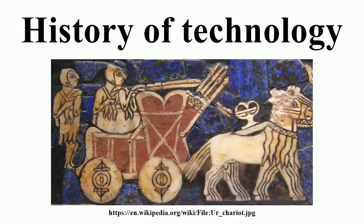White introduced a formula P equals E times T, where E is a measure of energy consumed and T is the measure of efficiency of technical factors utilizing the energy. In his own words, culture evolves as the amount of energy harnessed per capita per year is increased, or as the efficiency of the instrumental means of putting the energy to work is increased. Russian astronomer Nikolai Kardashev extrapolated this theory, creating the Kardashev Scale, which categorizes the energy use of advanced civilizations.